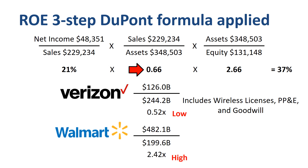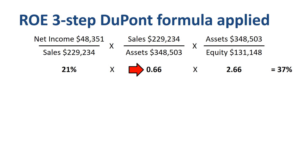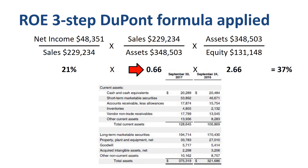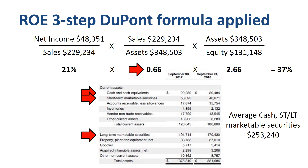That leads us to the question: what is going on in Apple's asset turnover? To answer that, let's turn to the line items of the left hand side of the balance sheet. Apple has a huge amount of cash, as well as short term and long term marketable securities. On average for 2017, the sum of those three is $253 billion, or 73% of the total assets. What is dragging down the asset turnover ratio is an unusually high number of financial assets, rather than the operating assets of the company.